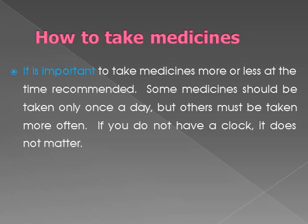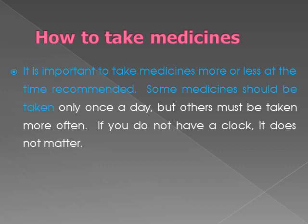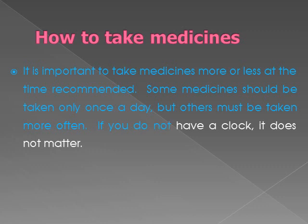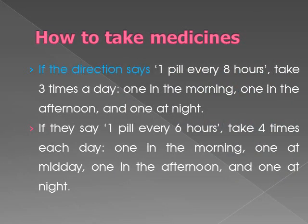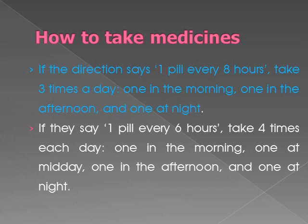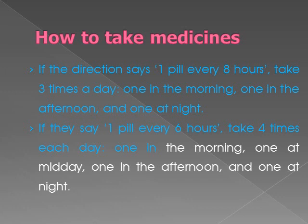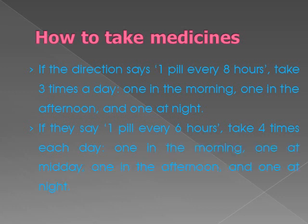How to take medicines: It is important to take medicines more or less at the time recommended. Some medicines should be taken only once a day, but others must be taken more often. If you do not have a clock, it does not matter. If the directions say one pill every 8 hours, take three times a day — one in the morning, one in the afternoon, and one at night. If they say one pill every 6 hours, take four times each day — one in the morning, one at midday, one in the afternoon, and one at night.